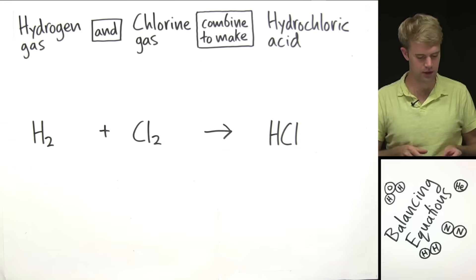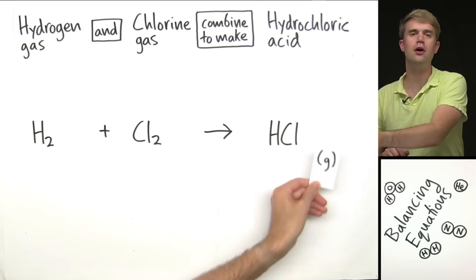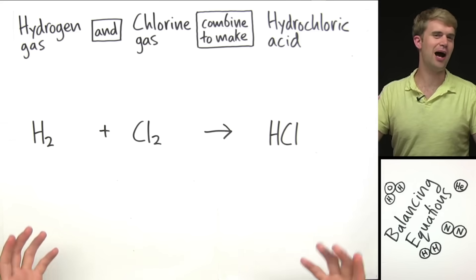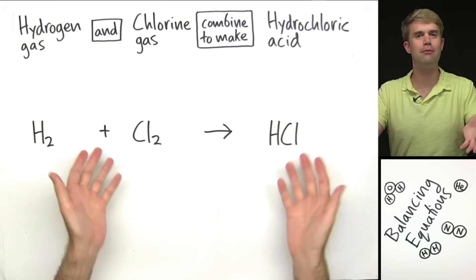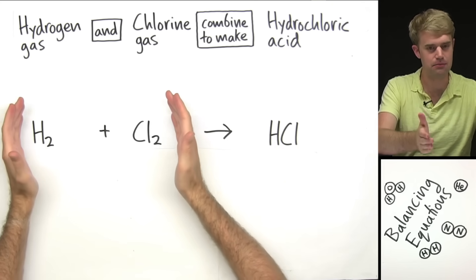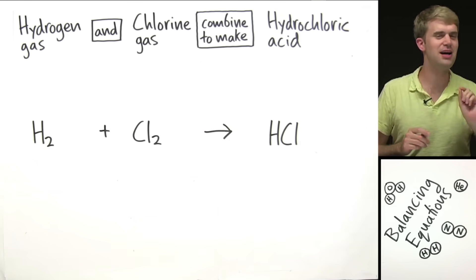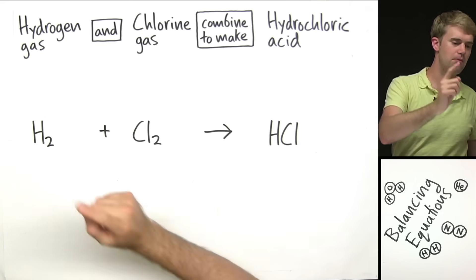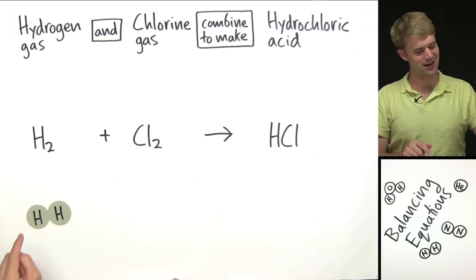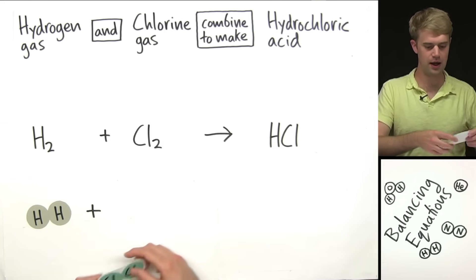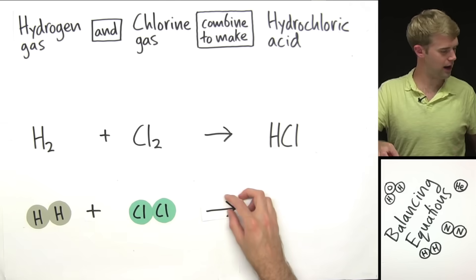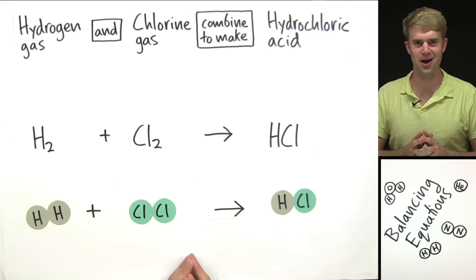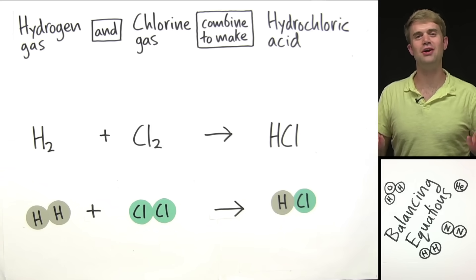Now, in order to start talking about equation balancing, we have to look at the atoms in this chemical equation — the number and type of atoms on both sides of the arrow. I have some diagrams here so we can do this visually. We've got a molecule of hydrogen gas with two hydrogen atoms, then a molecule of chlorine gas with two chlorine atoms, and finally a molecule of hydrochloric acid with one hydrogen and one chlorine.